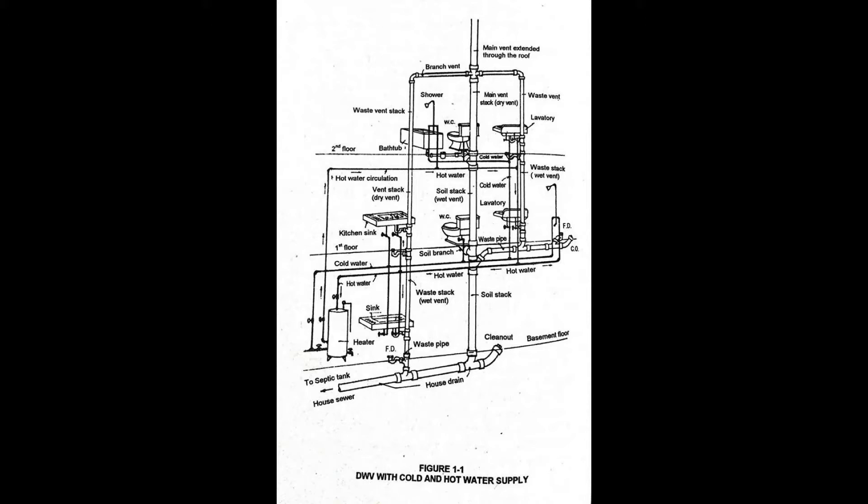Combination waste and vent system is a specially designed system of waste piping embodying the horizontal wet venting of one or more sink or floor drains by means of common waste and vent pipe adequately sized to provide free movement of air above the flow line of the drain.